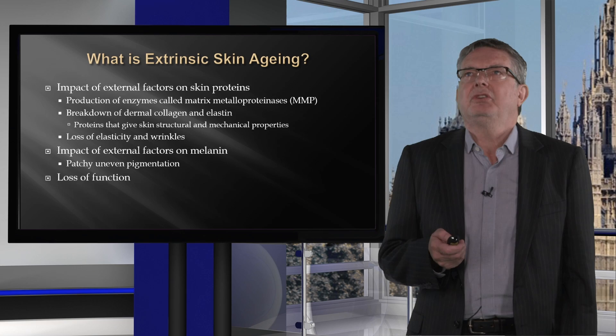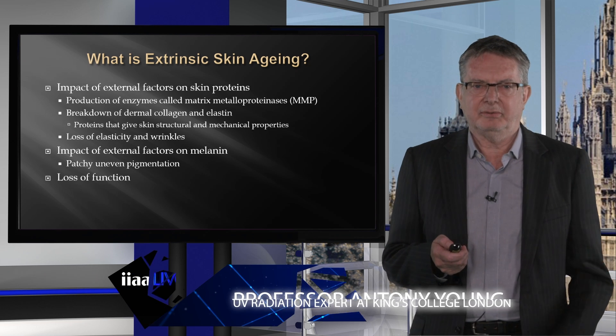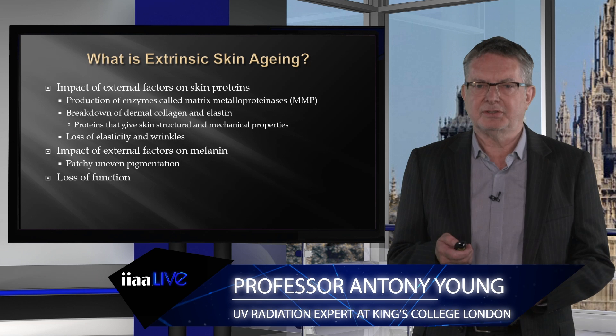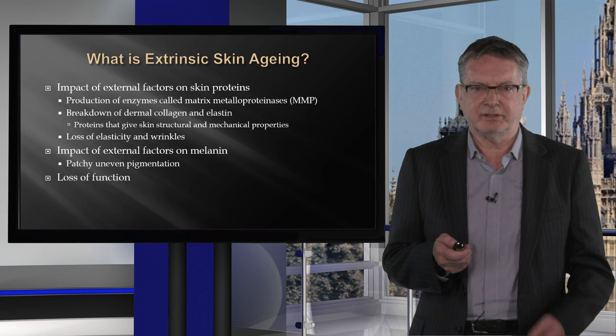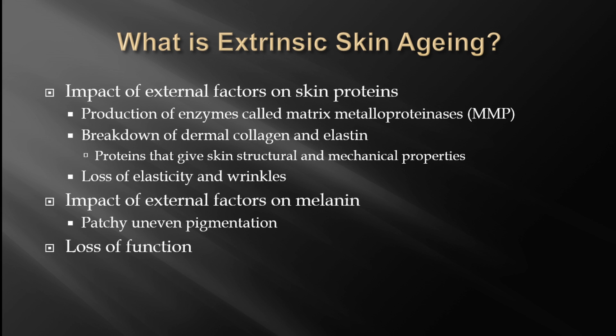Professor Anthony Young now discusses environmental factors that age the skin. Extrinsic skin aging is the impact of external factors on skin proteins — particularly collagens and elastin. The skin produces enzymes called matrix metalloproteinases (MMPs) that break down these structural proteins, which give skin its mechanical and elastic properties. This loss of elasticity can also result in wrinkles.